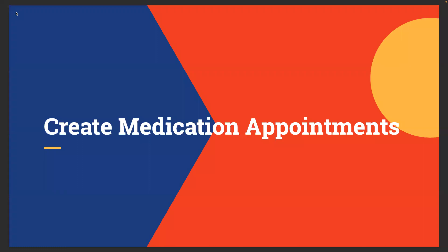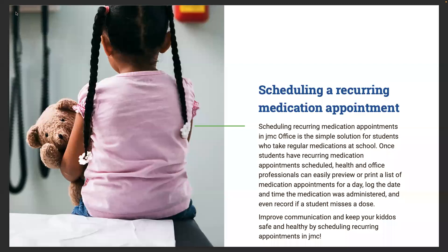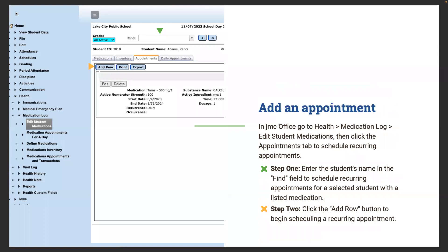Next we'll talk about creating medication appointments. This is where JMC will save you a lot of time and help you stay very organized in your health office. You can schedule recurring medication appointments — it's the simple solution for students who take regular medications at school. Once scheduled, health and office professionals can easily preview or print a list of medication appointments for a day, log the date and time the medication was administered, and record if a student misses a dose.